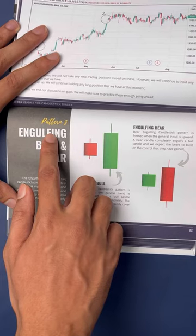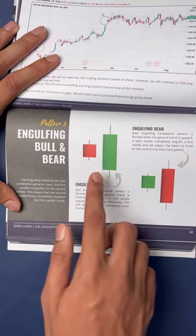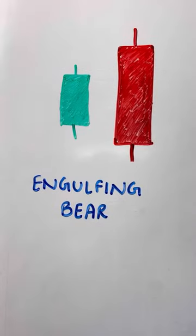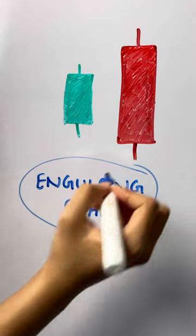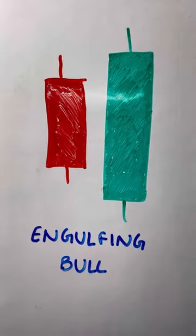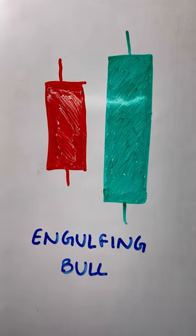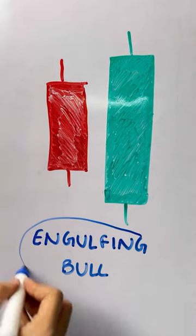The third candlestick pattern that I came across was engulfing bull and bear. In engulfing bear, a bear candlestick is engulfed by a bull candle signifying an upward trend. Vice versa for engulfing bull, where a bull candle is engulfed by a bearish candle signifying a downward trend.